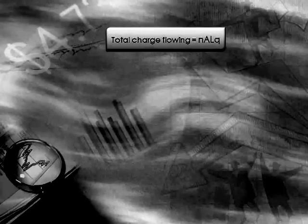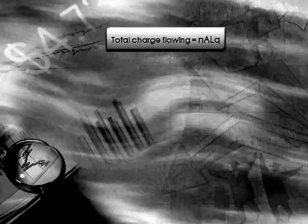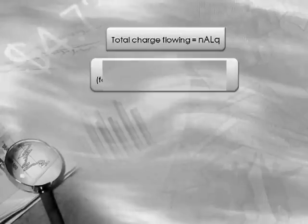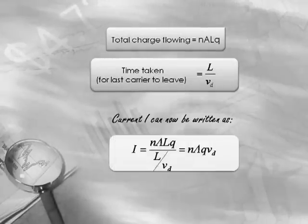Current is total charge flowing by total time taken. Now that we have numerator and denominator terms taken care of, we'll simply plug them here. The Ls in the top and the bottom cancel out and the Vd term goes to the top. I is equal to N times A times Q times Vd, which is a relationship between current and drift velocity. So if I know my I, N, A and Q values, my drift velocity will be nothing but this.